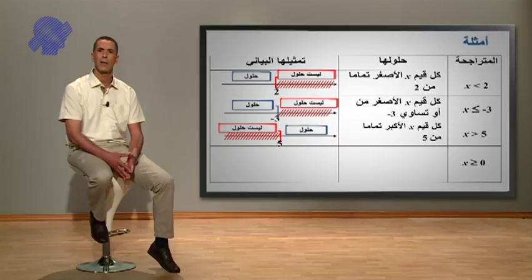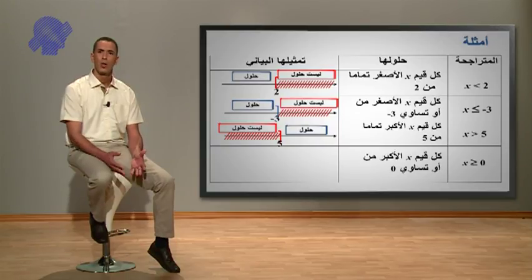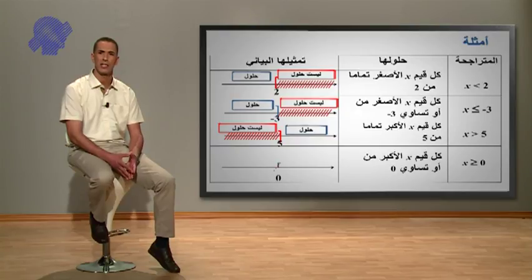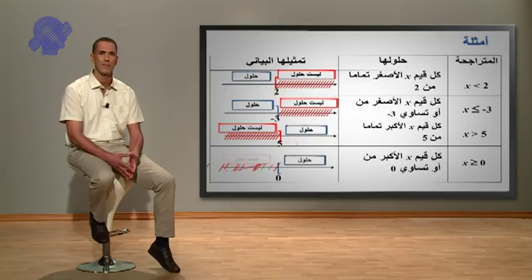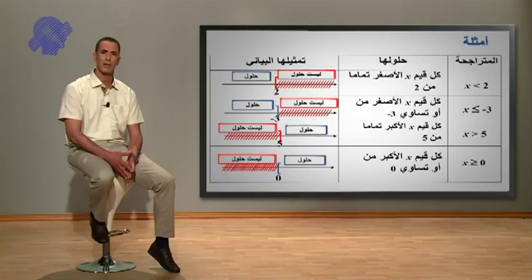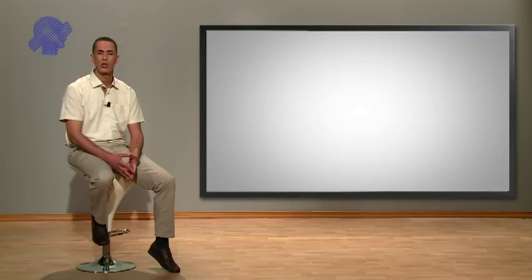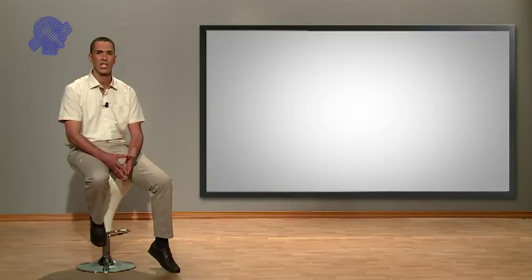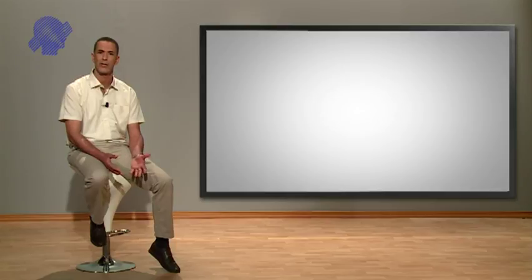X أكبر أو يساوي الصفر، كل قيم X الأكبر من أو تساوي الصفر هي حلول لهذه المتراجحة. الجزء المشطب غير حلول، الجزء الآخر هو حلول للمتراجحة مع الصفر هو حل لها كذلك.